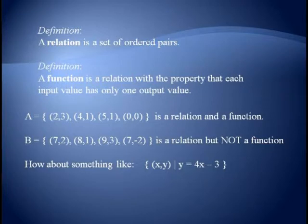Two sets of ordered pairs are shown here, which we're calling A and B. In set A, you can see that each input value only occurs once, hence each only has a single output value. So set A is a function. Set B, however, we have the ordered pairs (7, 2) and (7, −2). So if 7 is our input value, we have more than one possible output value, hence B is not a function.